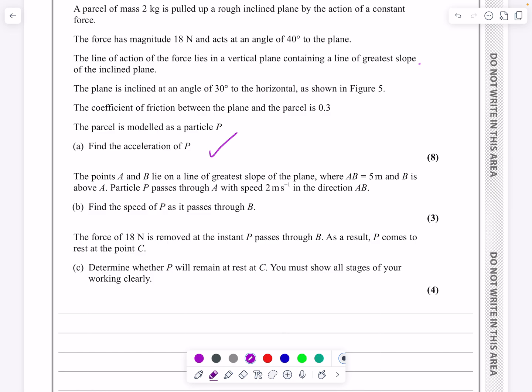What does it then say? It says two points a and b lie on the line. A, b is equal to 5 and b is above it. So it's going from a up to b. Particle passes through a with a speed 2 in the direction of a, b. Find the speed of p as it passes through b.